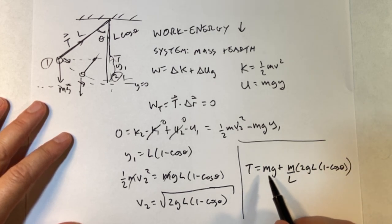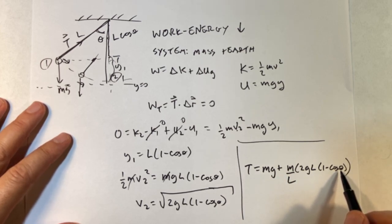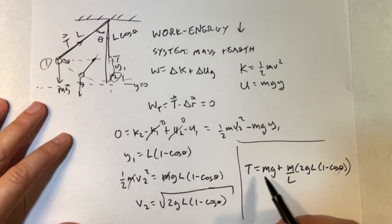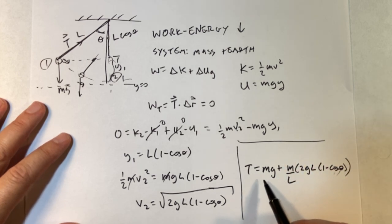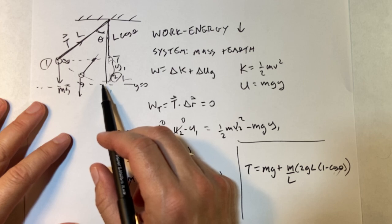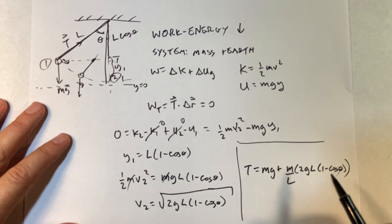And let's just check some things here. What if I start at theta equals zero? Well, then this would be one, and I'd get this whole thing would go to zero, and I'd get M G. That makes sense, right? Because if it starts down here at theta equals zero, it's not going to be moving. We already did that problem.